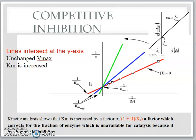The kinetic analysis shows that Km is increased by a factor of 1 plus I over Ki, where I means the inhibitor concentration. This factor corrects for the fraction of enzyme which is unavailable for catalysis because it has bound to the inhibitor.